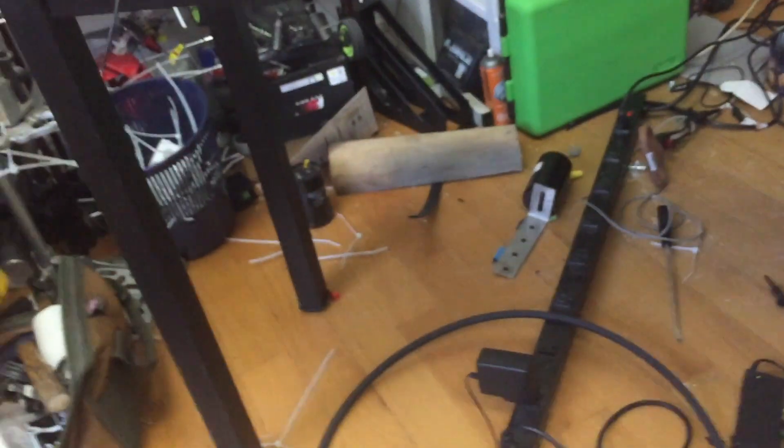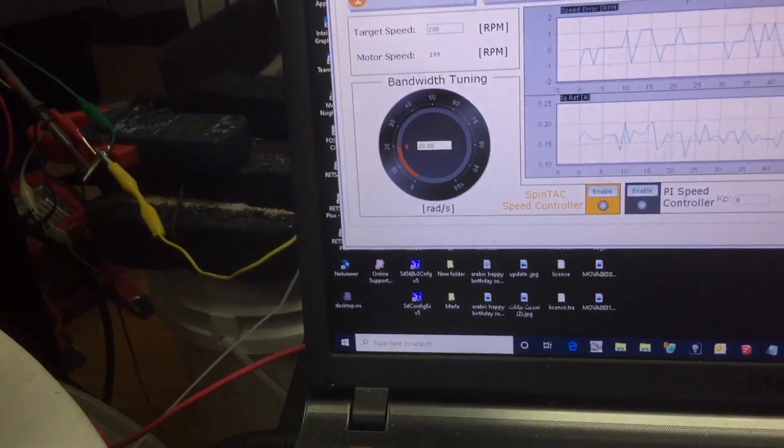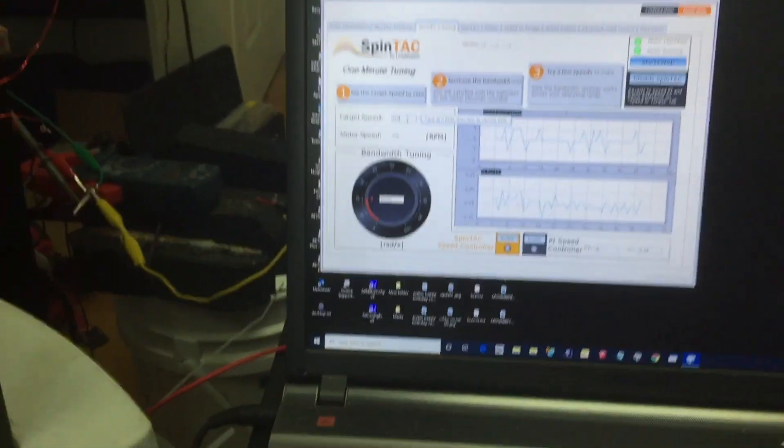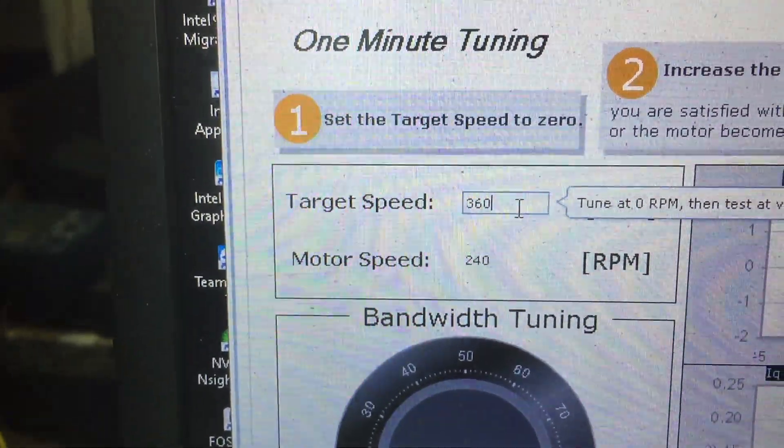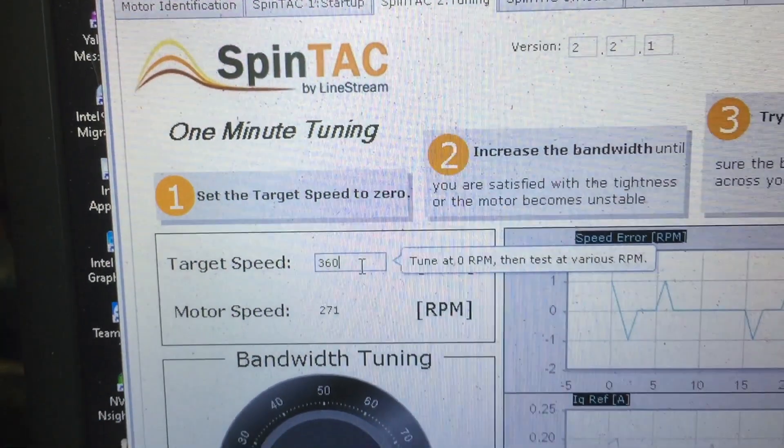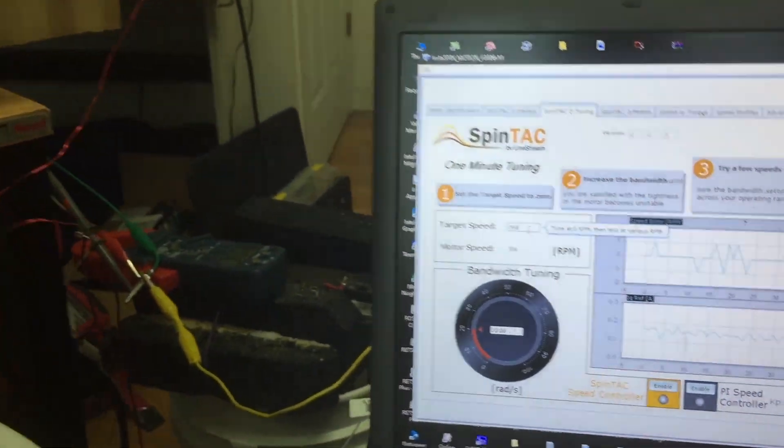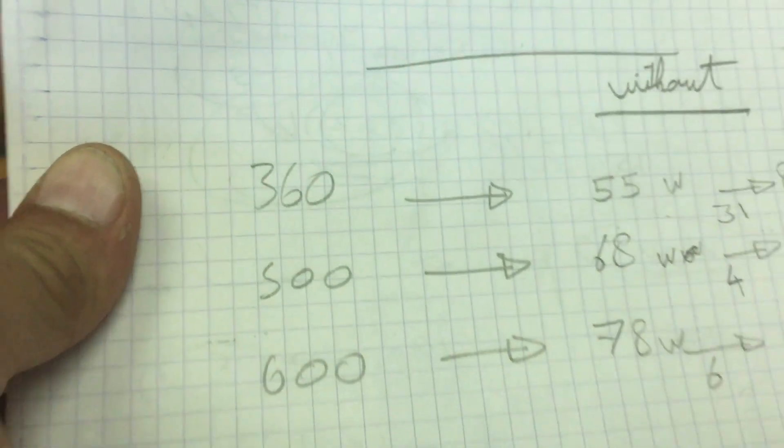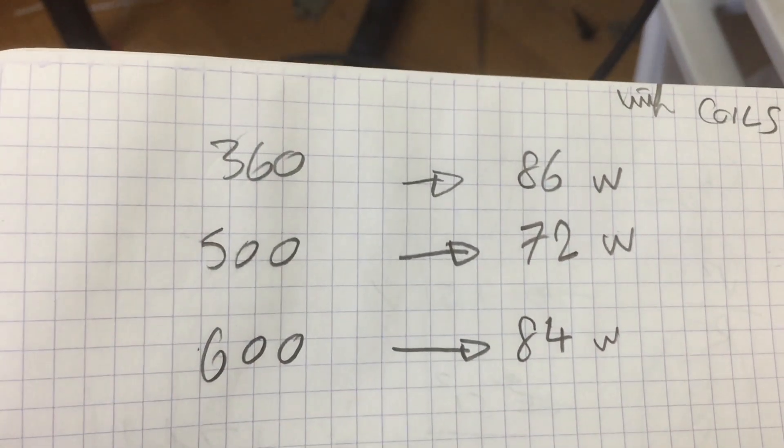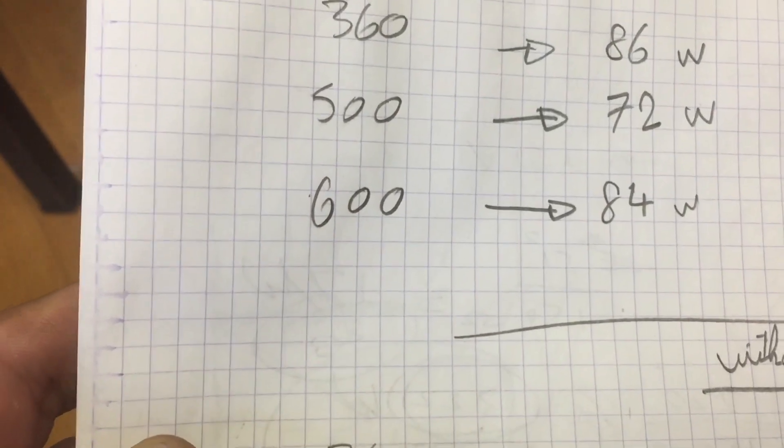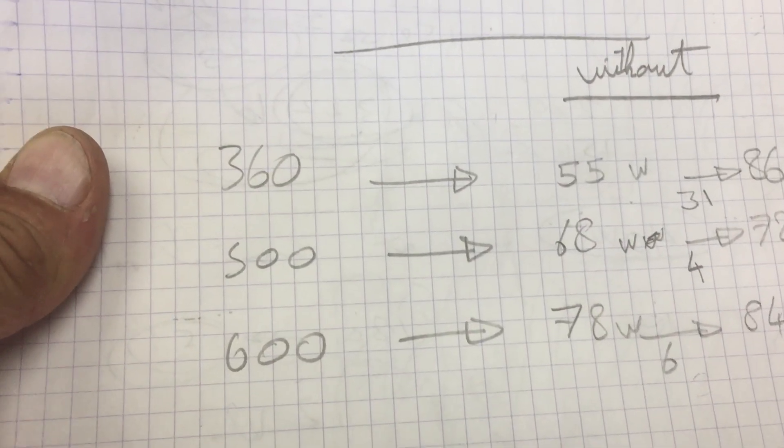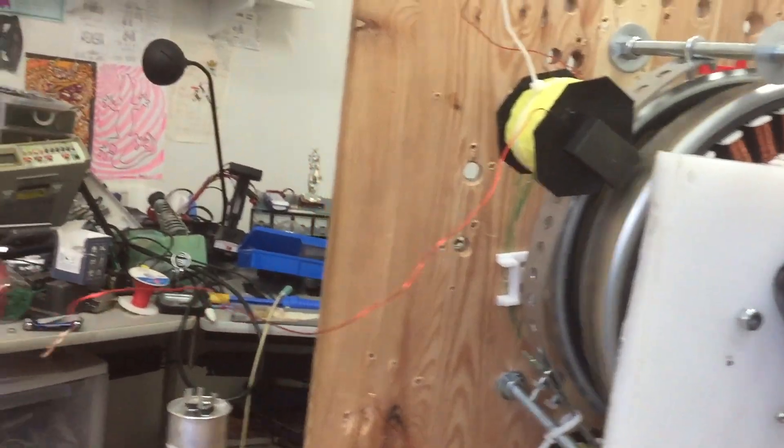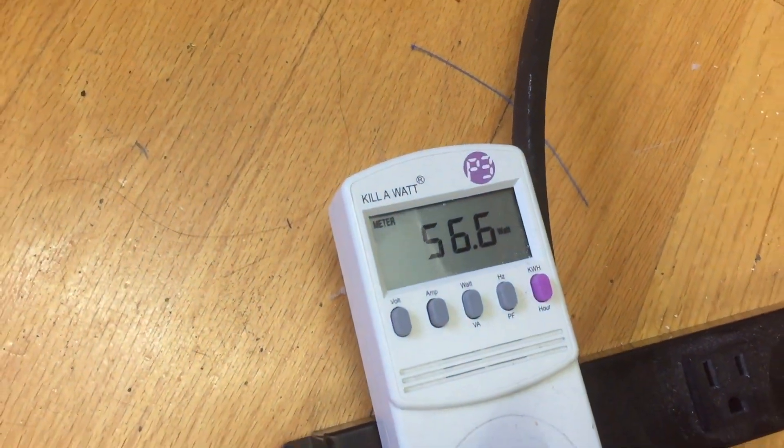So at 360 RPM I measured before, without coils it was 55 watts required for the prime mover. And this is without, and this is with. Now with the coils installed is 56 watts, which is very good at 360 RPM.